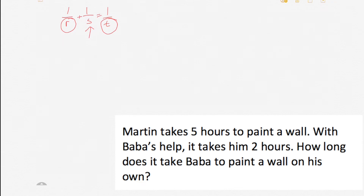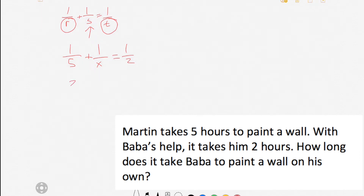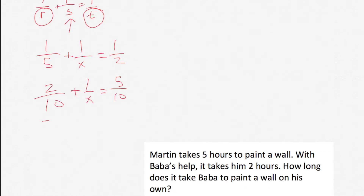So let's figure that out. One over R — that's Martin's time — so we have one over five, plus one over X, because we don't know what Baba's time is, equals one over T. We know how long it takes them to do it together: it's two. I want to find a common denominator with five and two, which would be ten. So one-fifth is like two-tenths, plus one over X equals five over ten. Now we subtract two-tenths from each side.